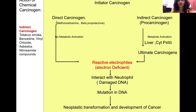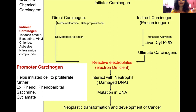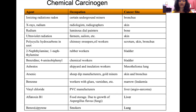Promoter carcinogens are not carcinogenic themselves, but if a cell is already initiated, they help it proliferate further. Examples include phenol, phenobarbital (used as an anti-seizure drug), and saccharin and cyclamate, which are artificial sweeteners and also act as promoter carcinogens.